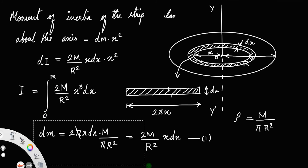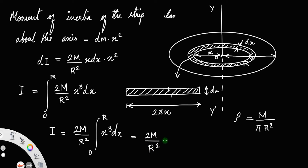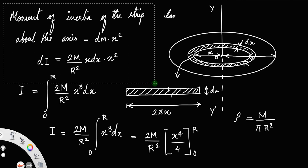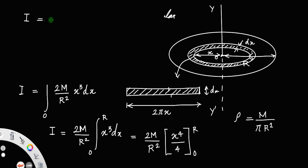Now we can integrate: I equals 2m/r² times the integral from 0 to r of x³·dx, since 2m/r² is a constant. The integral of x³ equals x⁴/4, evaluated from 0 to r. This gives I equals 2m/r² times r⁴/4.